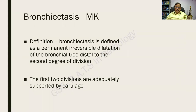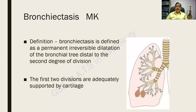Bronchiectasis is defined as a permanent, irreversible dilatation of the bronchial tree distal to the second degree of division. The first two divisions are adequately supported by cartilage. As seen in the picture, rims of cartilage are present in the trachea, the first degree, and the second degree of divisions — therefore these sites are prevented from bronchiectasis.